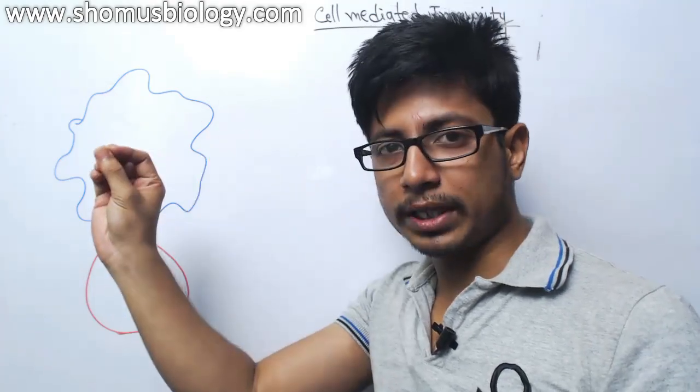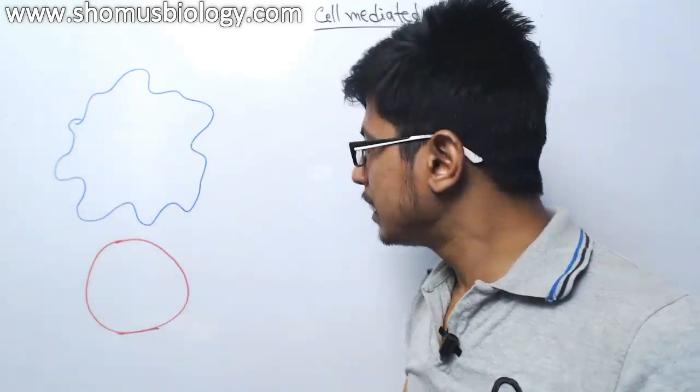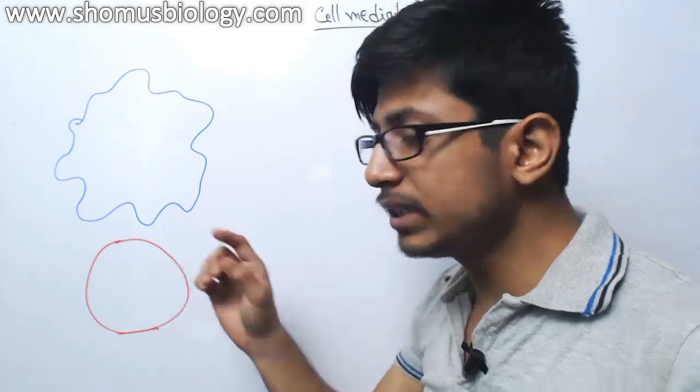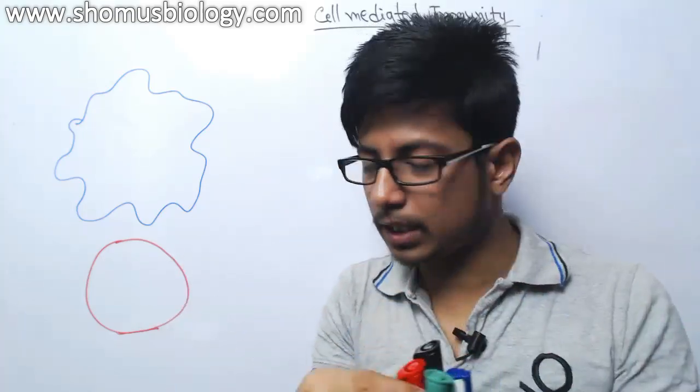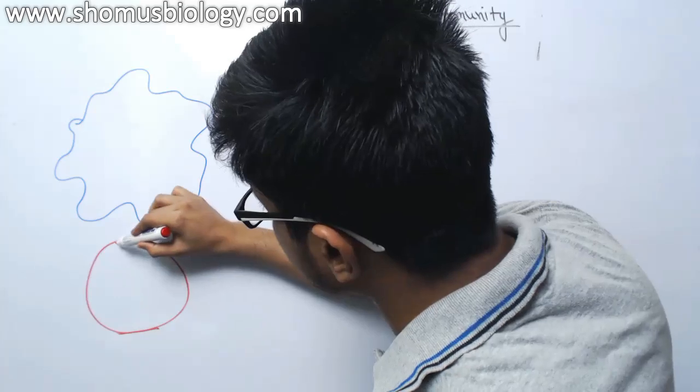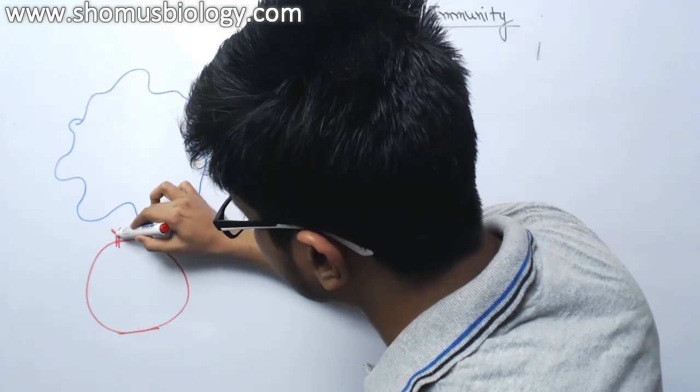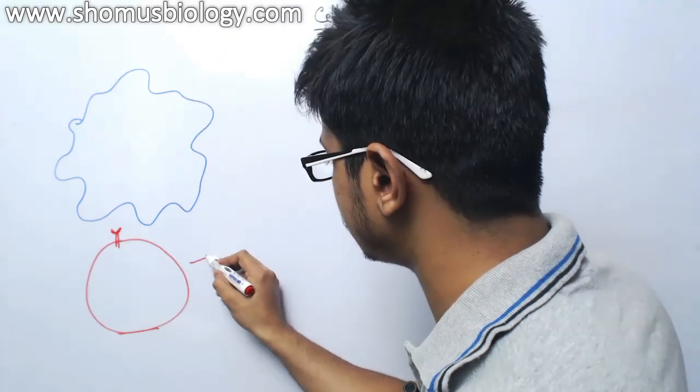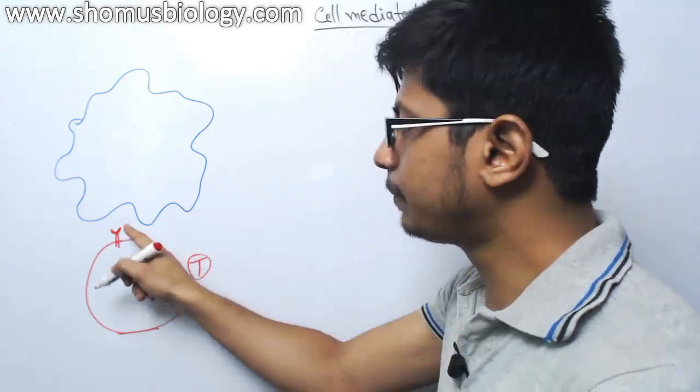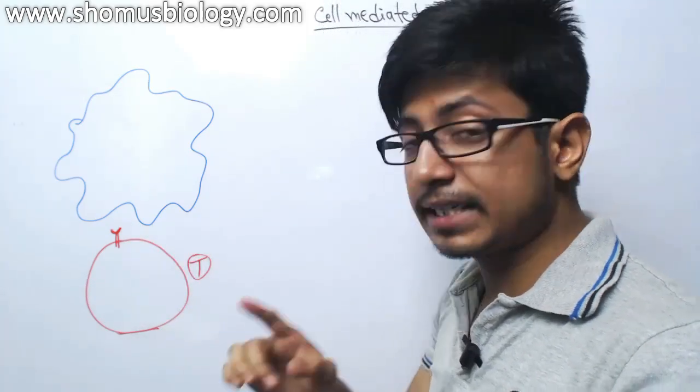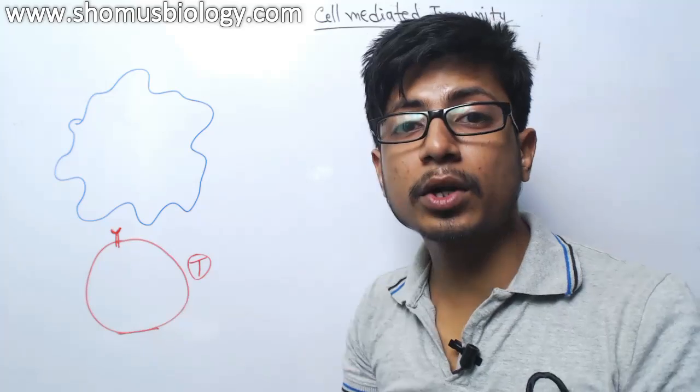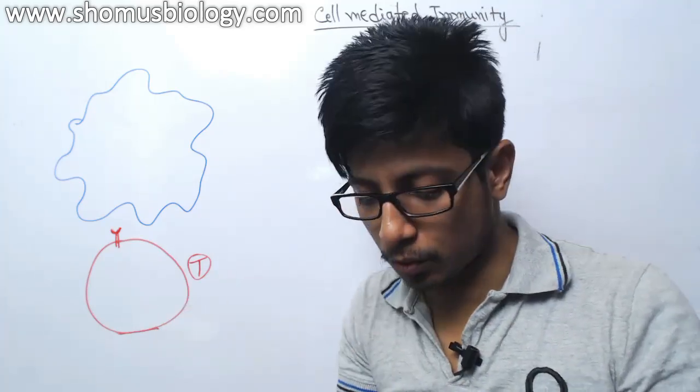Now T-cell with the help of its T-cell receptor, there is a unique receptor that is present on surface of T-cell. With the help of this T-cell receptor, it can interact with the major histocompatibility complex 2 or MHC 2.